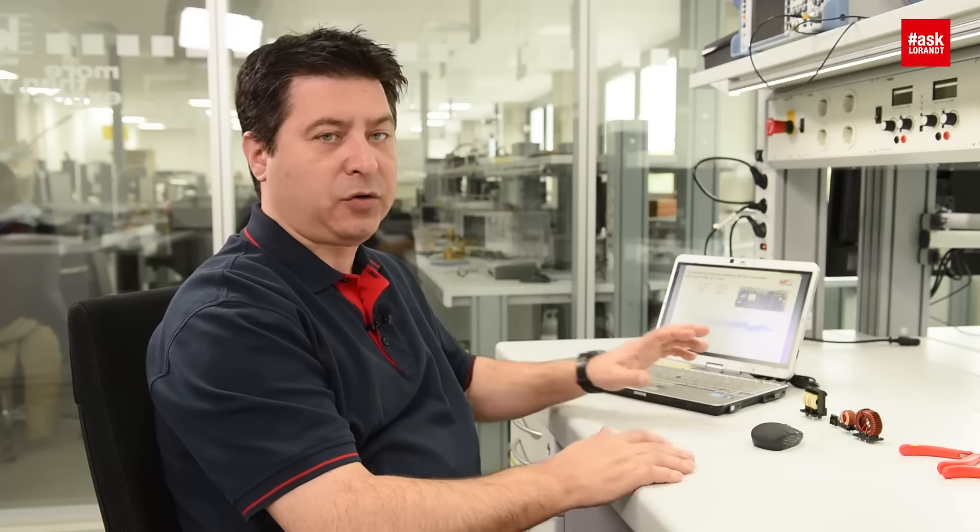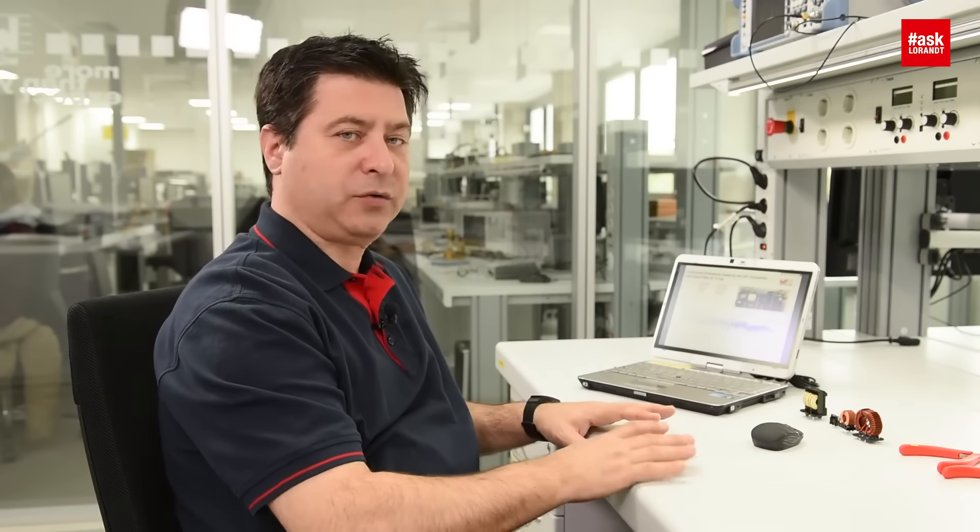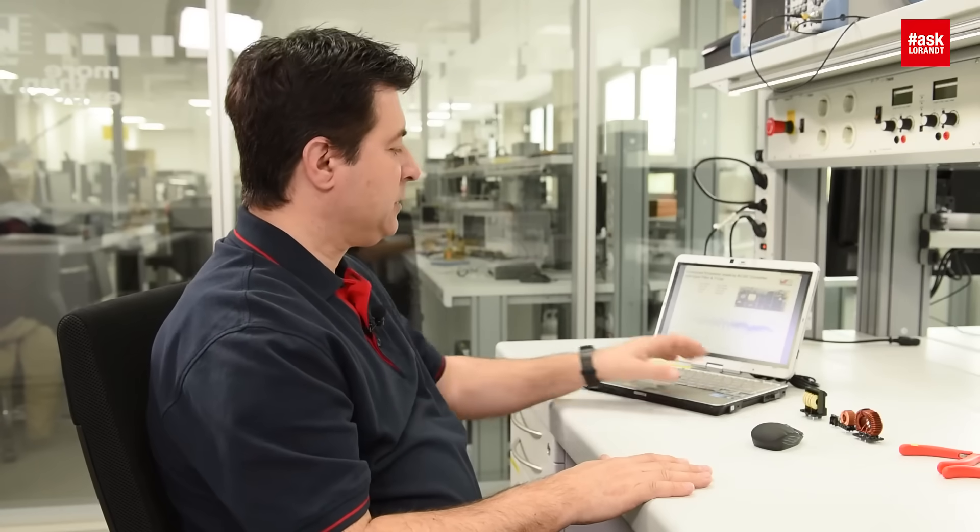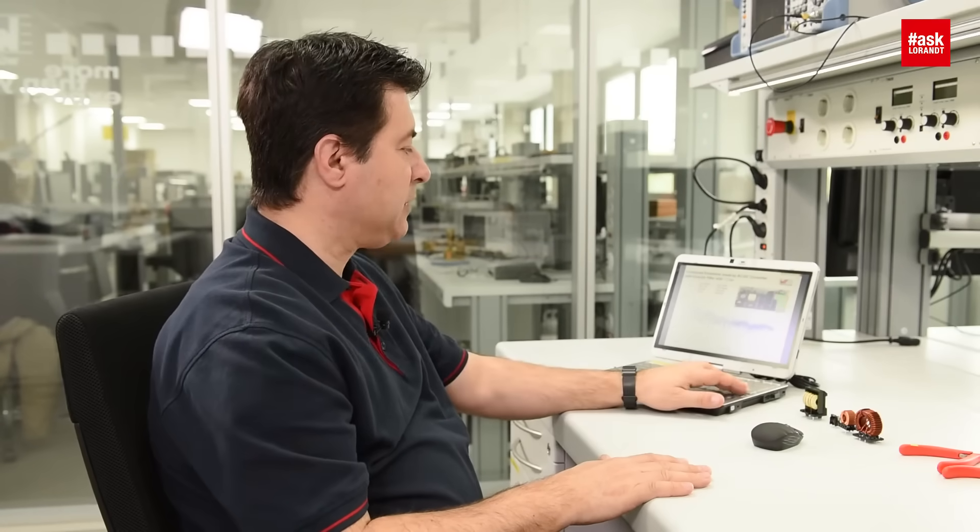If you are having a conducted emission for 150 kilohertz to 30 megahertz and you want to pass that with a flyback topology, I highly recommend to use a common mode choke and Y caps. You can see on the graph as well how big is this influence of these common mode chokes.